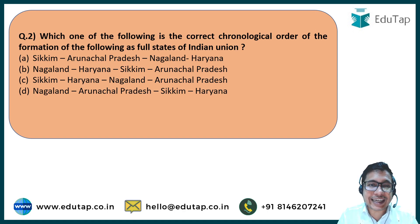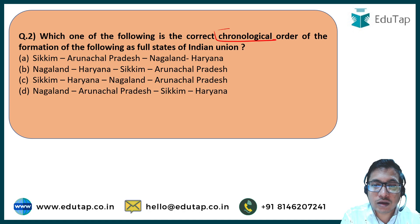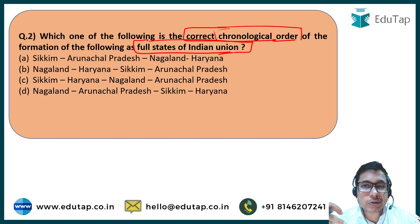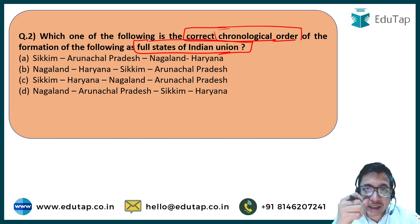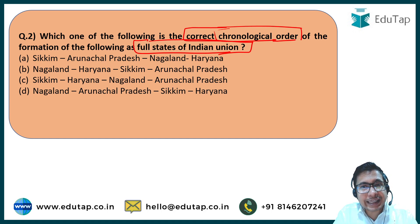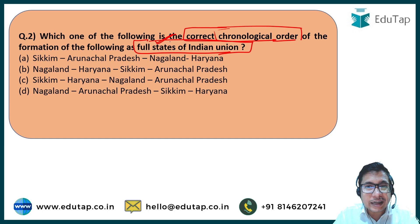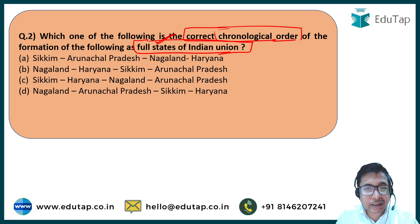Question number two: Which one of the following is the correct chronological order of the formation of the following as full states of the Indian Union? The four states in question are Sikkim, Arunachal Pradesh, Nagaland, and Haryana. Full statehood means having their own legislative assembly and autonomous government.